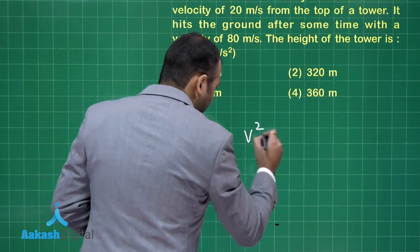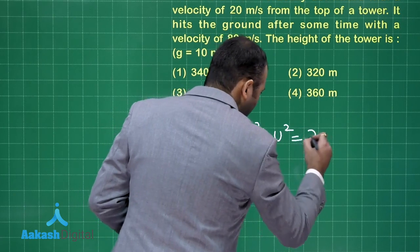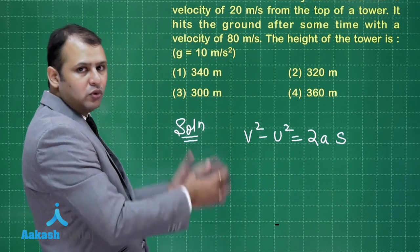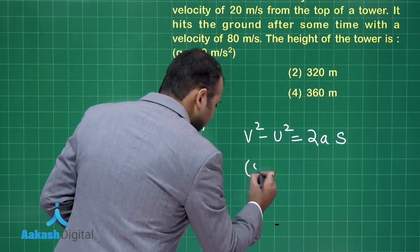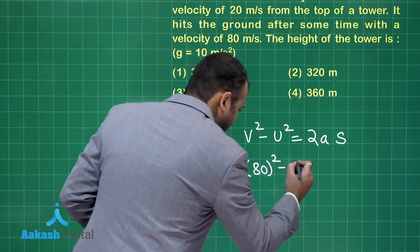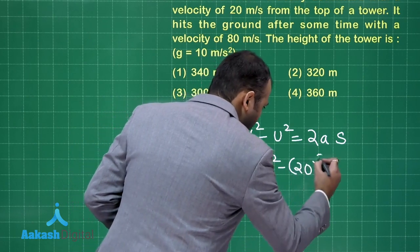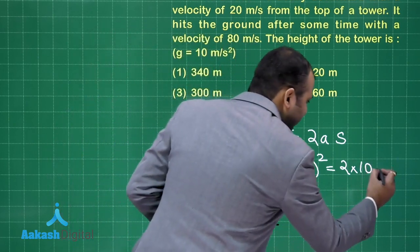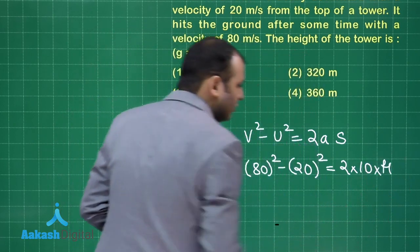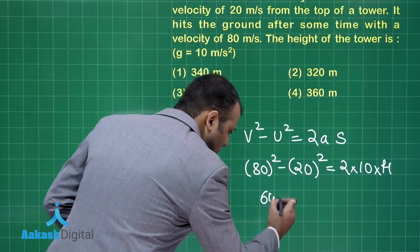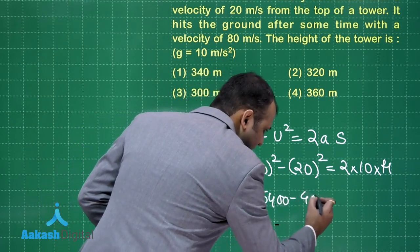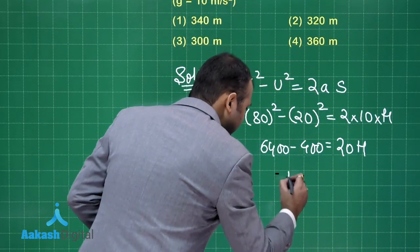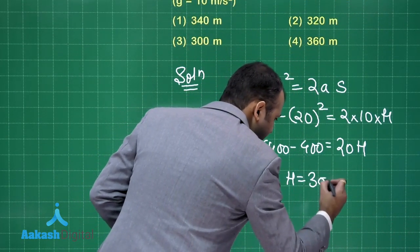Applying the formula v squared minus u squared equals 2as. Since the ball has been thrown downwards, downward is taken as positive. So this is 80 squared minus 20 squared, equals 2 into 10 — that is acceleration due to gravity — into h, the height of the tower. Solving: 6400 minus 400 equals 20h, giving h equals 300 meters.